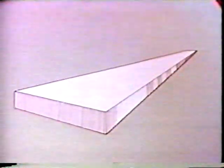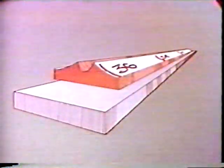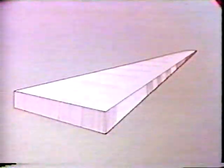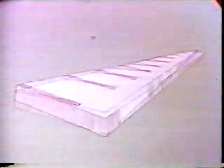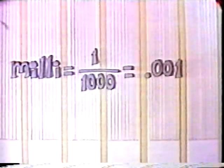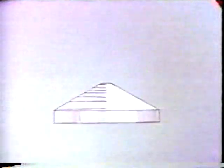The meter is about 39 inches long, slightly larger than the yard. But unlike the yard, the meter is divided into 10 decimeters, or 100 centimeters, or 1,000 millimeters. One thousand meters are called a kilometer.